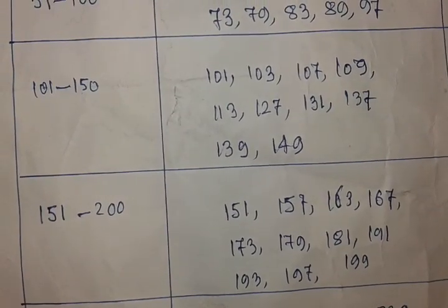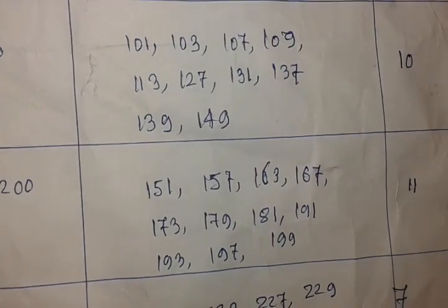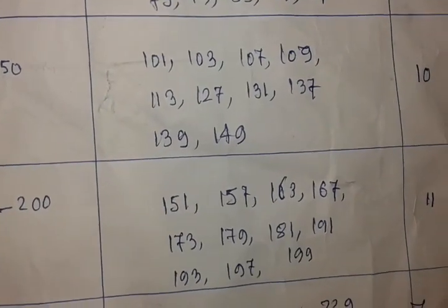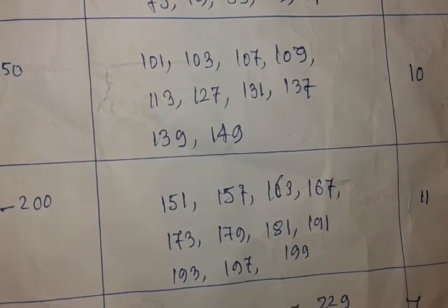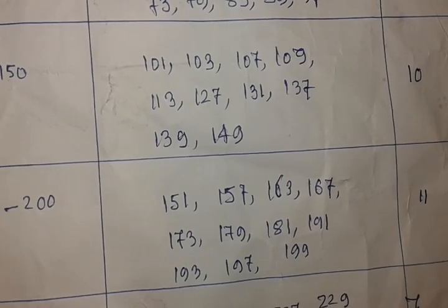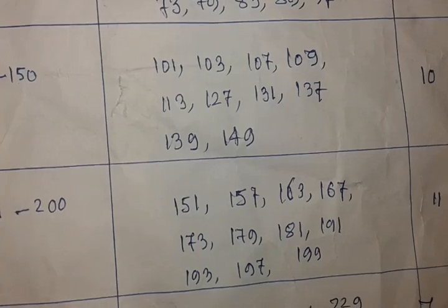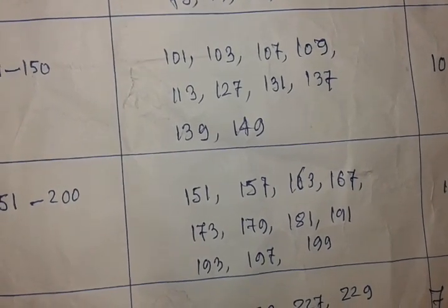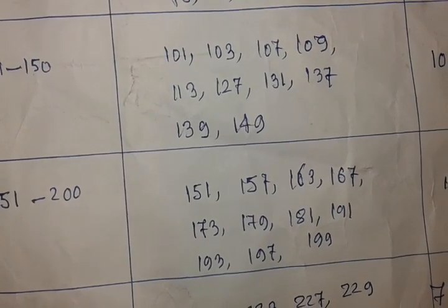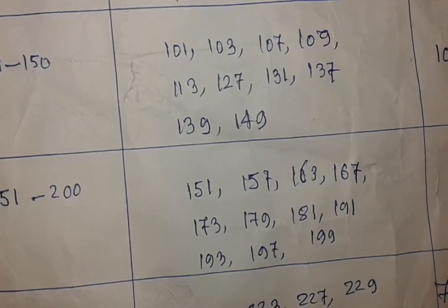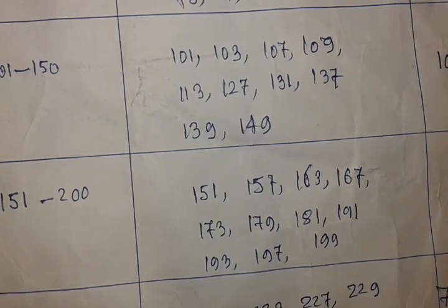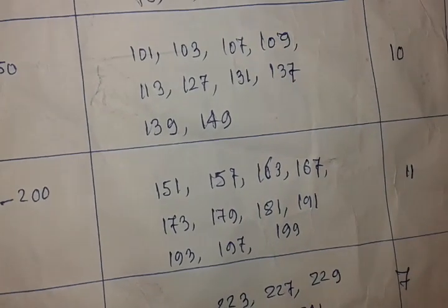150 to 200. So friends, there are 11 prime numbers: 151, 157, 163, 167, 173, 179, 181, 191, 193, 197, 199. So friends, there are 11 prime numbers.